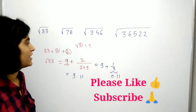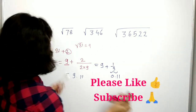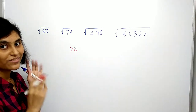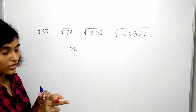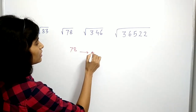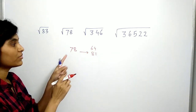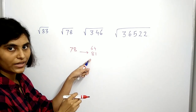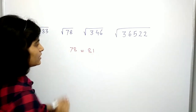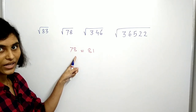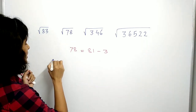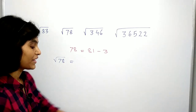Similarly, we can find the square root of 78. Now 78 is in between 64 and 81, which are perfect square numbers. The closest perfect square number to 78 is clearly 81. When we write 81, we have to subtract something to get 78, which is clearly 3. So we write 81 minus 3 equals 78.